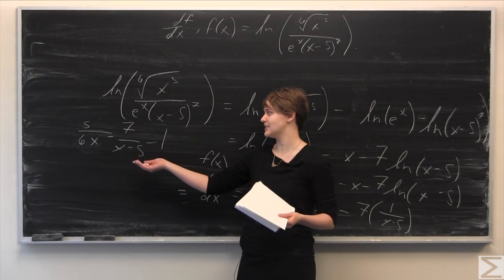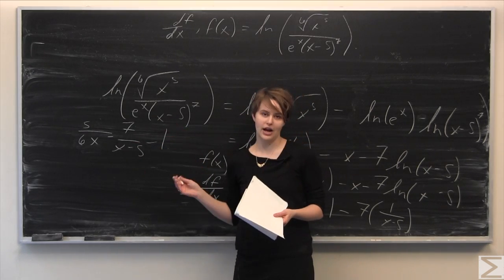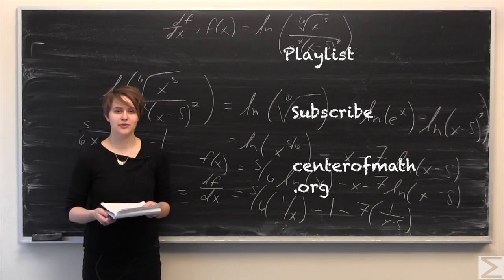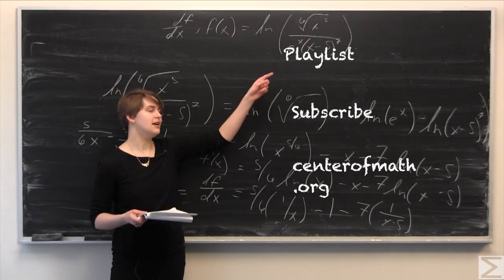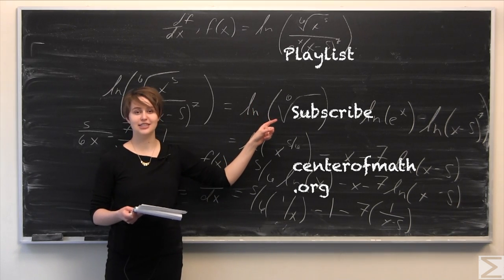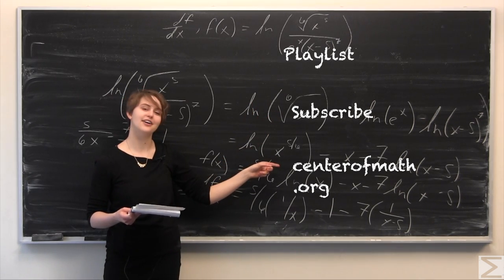Our derivative in the end is five over six x minus seven over x minus five, all minus one. That's it for this week's problem of the week. For more problems of the week, you can see our playlist here. Subscribe to us at our YouTube channel, and to visit us at centerofmath.org, click this link here. Thank you for watching.